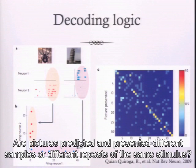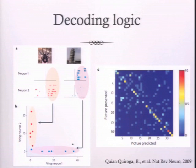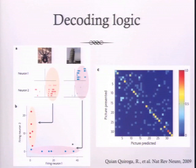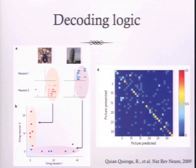To clarify: in this example, we have a database of 35 different images, and we're trying to use this decoder to predict which one of these 35 is presented on the screen given a certain population response. After training, you want to test the accuracy of your decoder — that's what tells you whether the decoder is doing a good job and whether you should rely on its predictions.